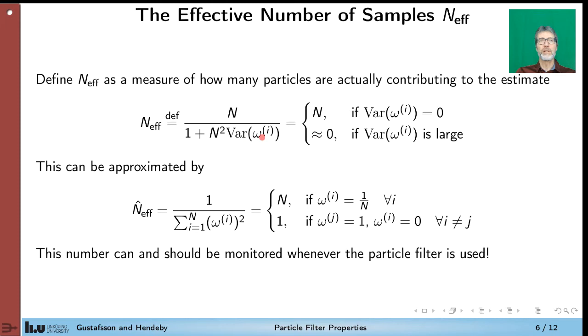So we cannot compute the variance, the stochastic variance of the weights. But what we can compute is something based on the weights we actually have. And it turns out that this approximation, this N-hat here, has the nice property that if all weights are the same, it will be exactly N. And if one weight is 1 and the other ones are 0, we can quickly see that this expression becomes 1. And it's a continuous measure. So the larger it is, the closer to N, the better the particle filter is performing.